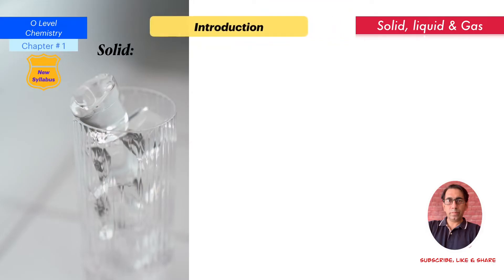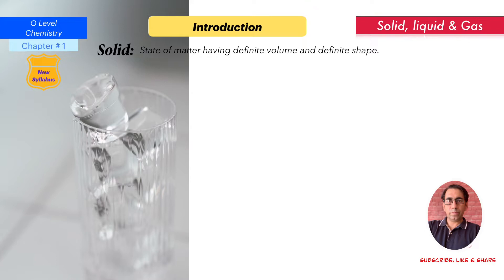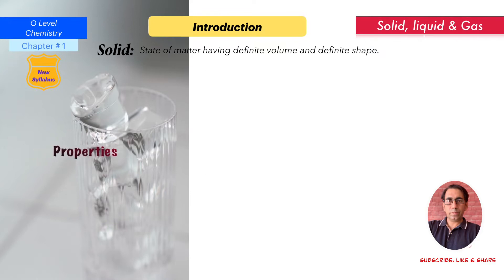Solids. A solid is a state of matter having definite volume and definite shape. We cannot change the volume of a solid by simple means, and we cannot change the shape of a solid by ordinary or simple means. So a state of matter that has definite volume and definite shape is said to be a solid.